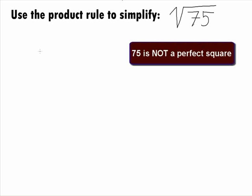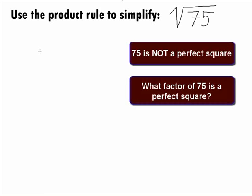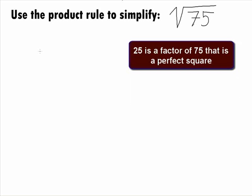75 itself is not a perfect square, so we need to think to ourselves, is there a factor of 75 that we can take the square root of? Hey, 25 is a factor of 75 and is a perfect square.